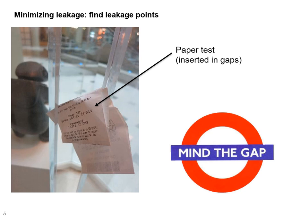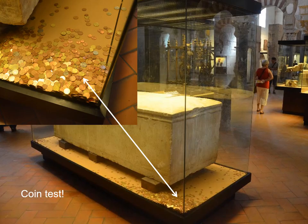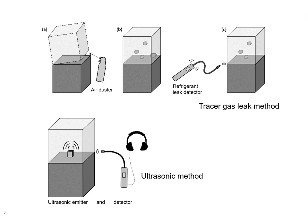To minimize leakage, you have to find the leakage point. That could be done by visual observation — you look with your own eyes to see if you can see an obvious crack. If it's not too obvious, you could use what we call the paper test: are you able to insert a piece of paper? You could do the same thing with a credit card — can you insert a credit card in your cases? As a joke, you could also see how tight the cases are if people can insert coins inside.